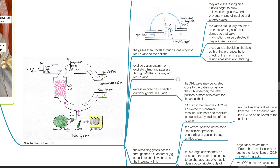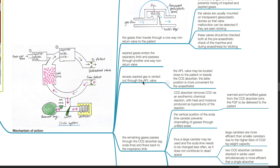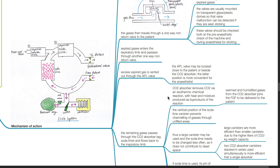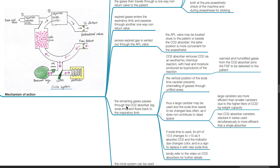Expired gases enter the expiratory limb and pass through another one-way non-return valve. Excess expired gas is vented out through the APL valve, which may be located close to the patient or beside the CO2 absorber — the latter position being more convenient for the anesthetist. The remaining gases pass through the CO2 absorber, for example soda lime, and flow back to the inspiratory limb. The CO2 absorber removes CO2 via an exothermic chemical reaction, with heat and moisture produced as by-products. Warm and humidified gases from the CO2 absorber then join the fresh gas flow to be delivered to the patient.